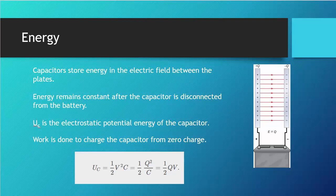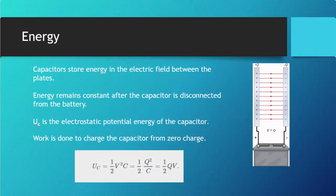The potential energy of the capacitor is capital U with a subscript C, like capacitor energy. The equations are related to charge, voltage, and capacitance, and the work done to charge the capacitor from zero to a full charge is equal to that electrostatic potential energy. It's kind of like pushing a rock up a hill — how much work it takes to charge it is equal to the potential stored there.